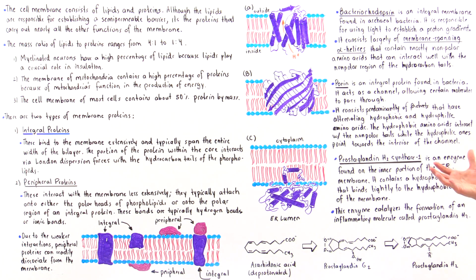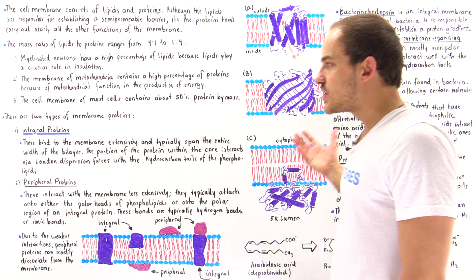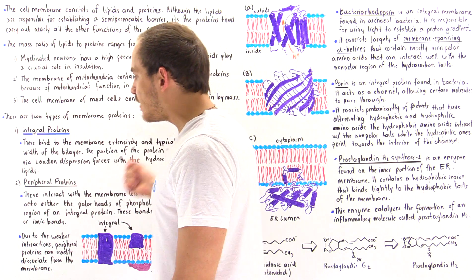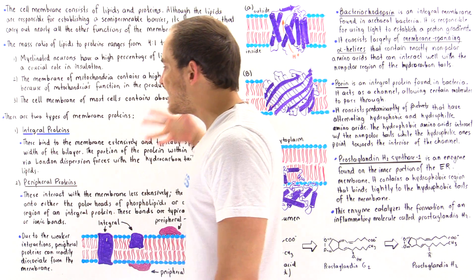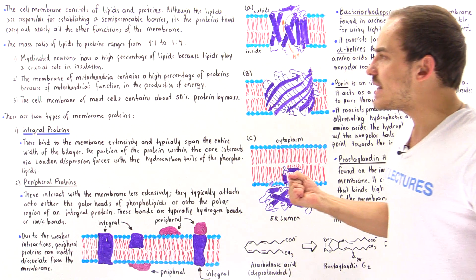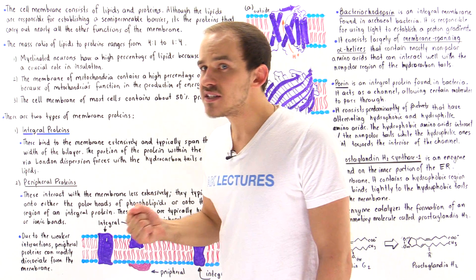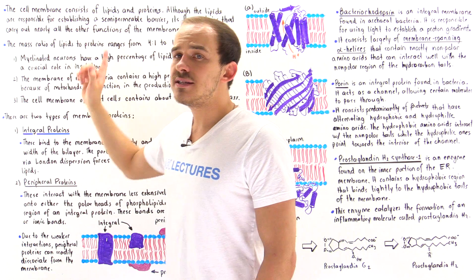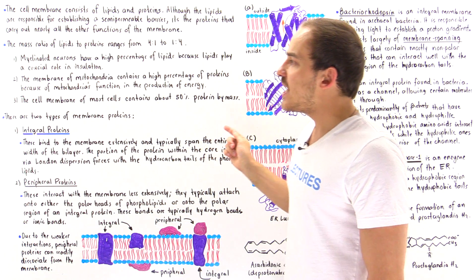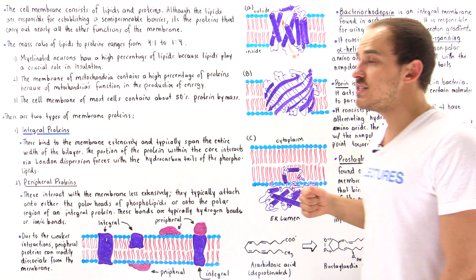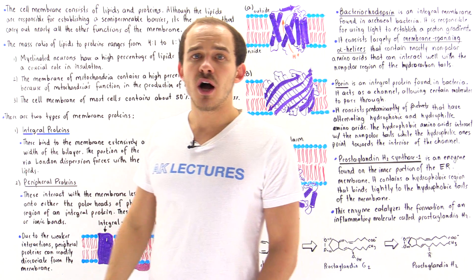And so we see that there are many different examples of integral proteins and peripheral proteins. But together, all these proteins that constitute the membranes of our body are responsible for carrying out these different types of functions. And we'll look at many more examples in the lectures to come.